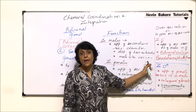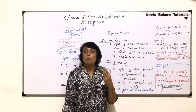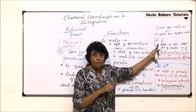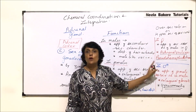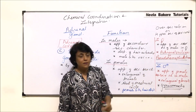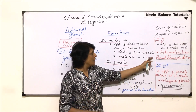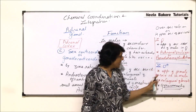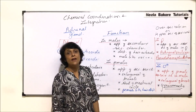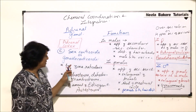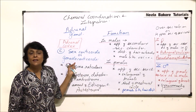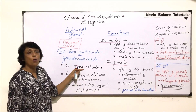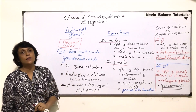But if the same sex corticoids are secreted in excess, in females the characters which appear would be of males, and in males the characters which appear would be of females. In females, this condition is known as adrenal virilism or pseudo-hermaphroditism. In males, this condition is known as gynecomastia. This is the third zone of the adrenal cortex — zona reticularis — and the hormones secreted are known as sex corticoids.